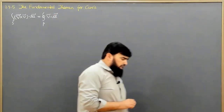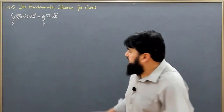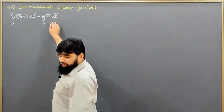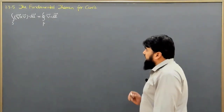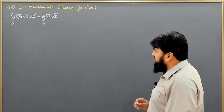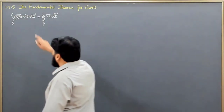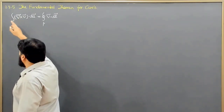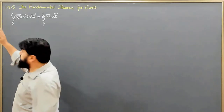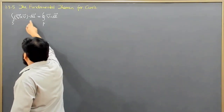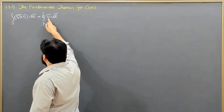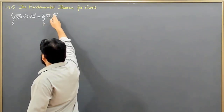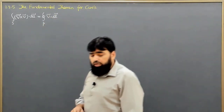What this theorem is saying is that it relates the surface integral to the line integral. If we are having a physical quantity and we find the flux of the curl of that quantity on a surface — and it is a flux, so it will be on a surface — this will be the same as if we just take that quantity and line integrate it along the length element.